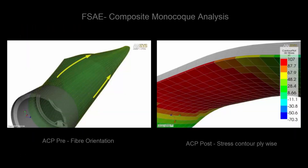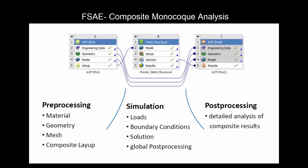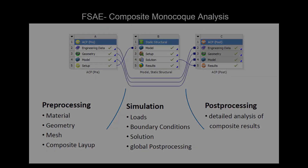The ANSYS Composite Pre and Post offers a variety of capabilities required for analyzing laminates, fiber angles, and failure criterias to enable simulation-driven product development.